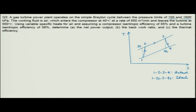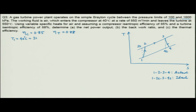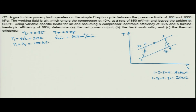The compressor isentropic efficiency is 0.85 and the turbine isentropic efficiency is 0.88. Temperature at the inlet of the compressor is 40 degree centigrade, so T_1 is 313 Kelvin. The volumetric flow rate of air is given as 850 m³/min.